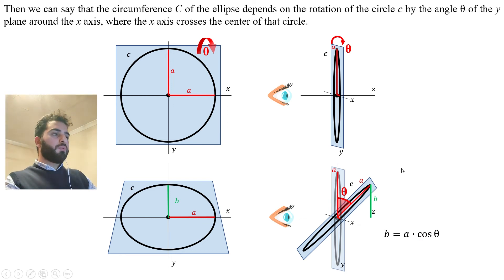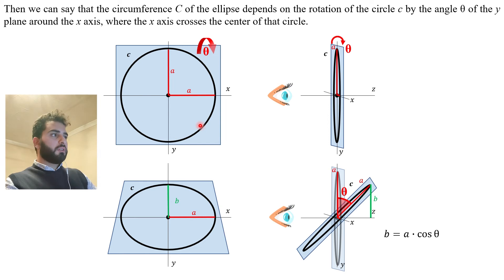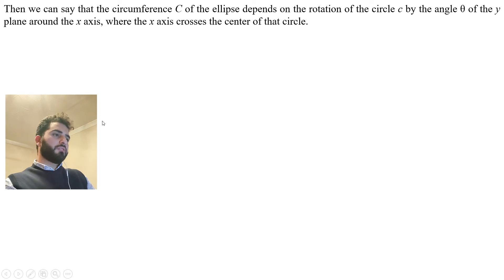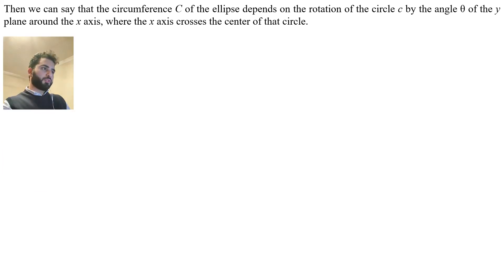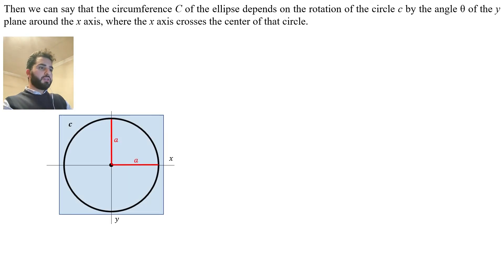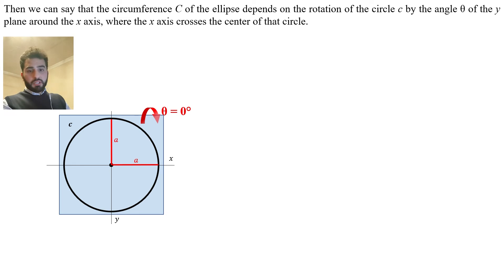The circumference of the ellipse depends on the value of theta — that is, on the rotation of the y-plane around the x-axis. We will rotate the circle by different specific angles that support this demonstration. Let's start by rotating the y-plane with theta equal to 0 degrees, which simply means not rotating it at all. So what would the semi-minor axis b become?